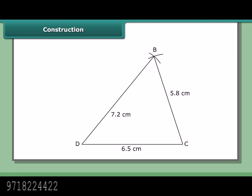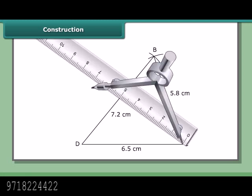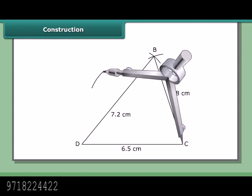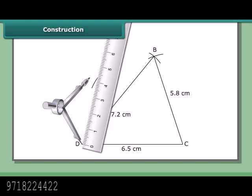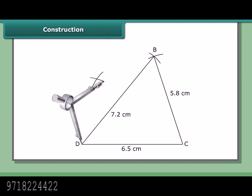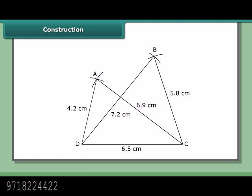Constructing triangle ACD: With C as center and radius 6.9 cm, draw an arc on the same side of DC. With D as center and radius 4.2 cm, draw another arc to cut the previous arc at A. Join CA and DA. Join AB. Then ABCD is the required quadrilateral with diagonals AC and BD.